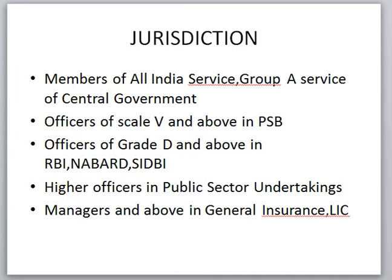Regarding jurisdiction: any major officer involved in corruption comes under the jurisdiction of the Central Vigilance Commission. No minister comes under the CVC. State government officers do not come under the CVC — only central government officers, as well as officers in public sector banks and public sector undertakings at a higher level, come under it. Officers receiving a salary of eight thousand seven hundred rupees per month also come under its jurisdiction.